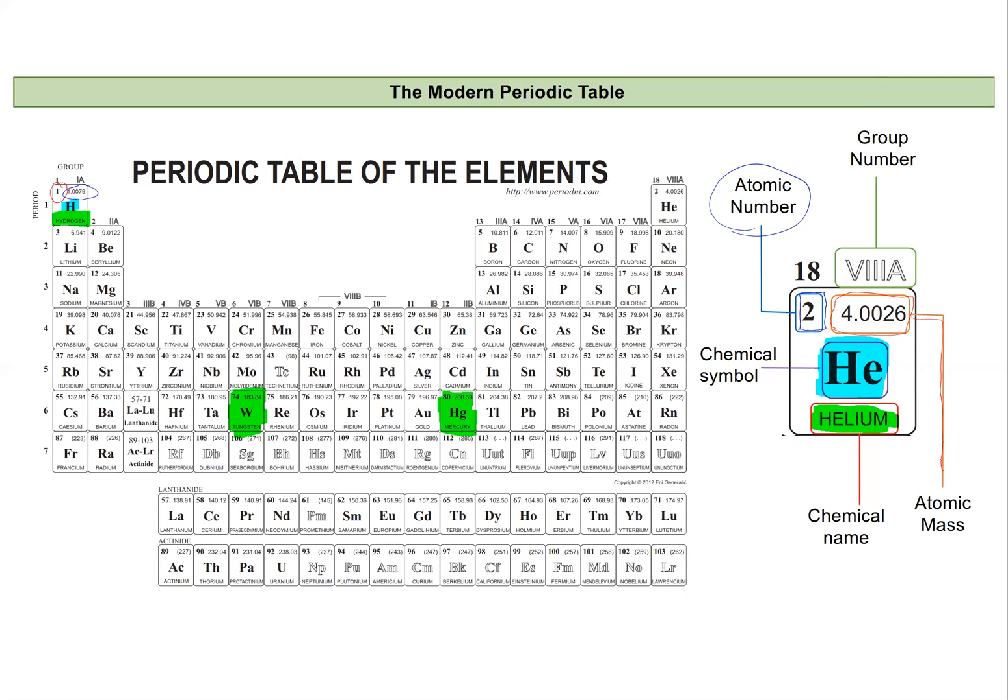There's also something that's the group number, and this isn't above every single square, but you can find these up here at the tops of each of the columns on the periodic table. And this gives you a little bit of information about the number of valence electrons in the elements that are in the column. And so a group will be this entire column of elements, and they'll share a lot of similarities.